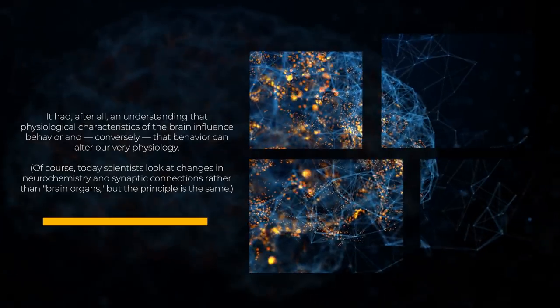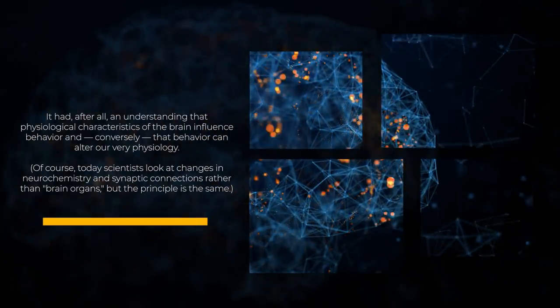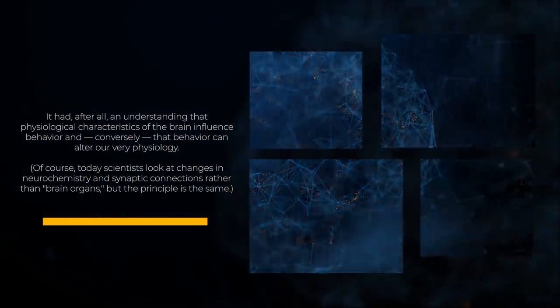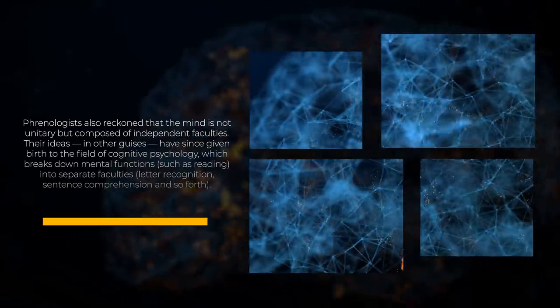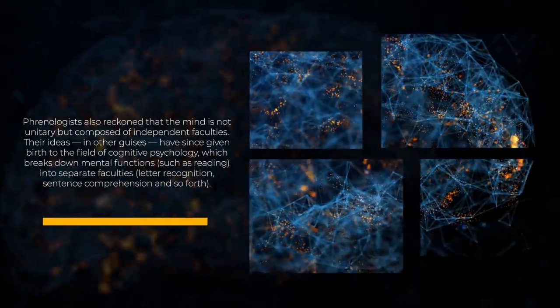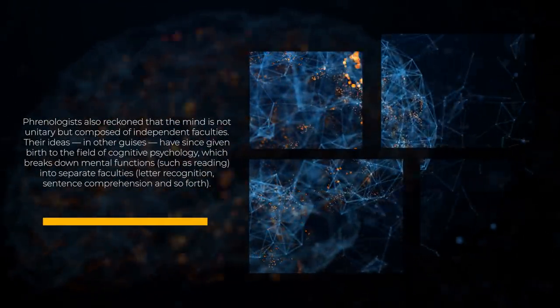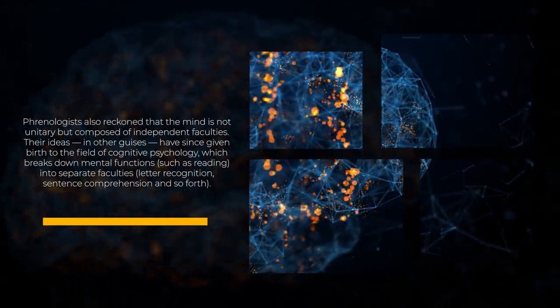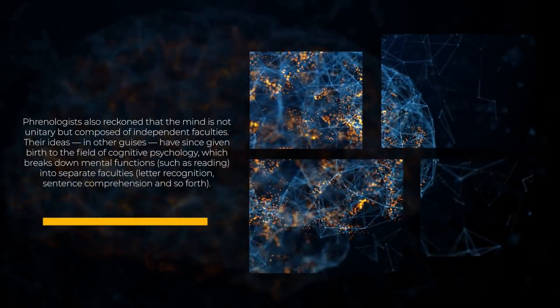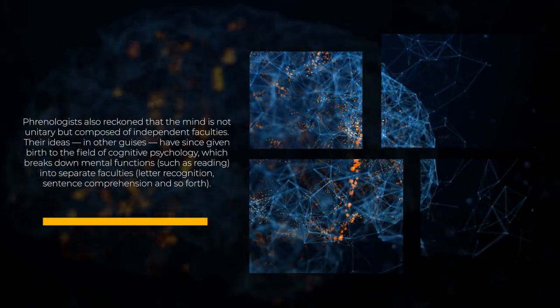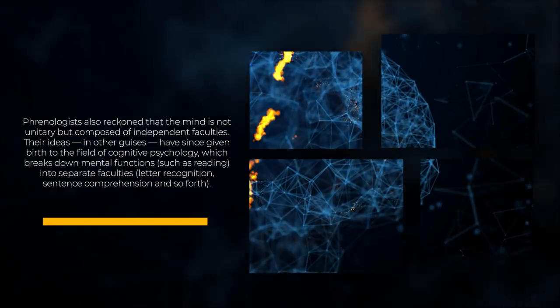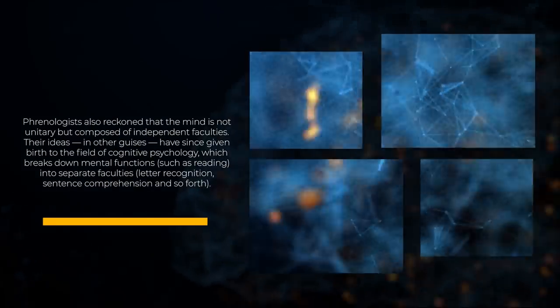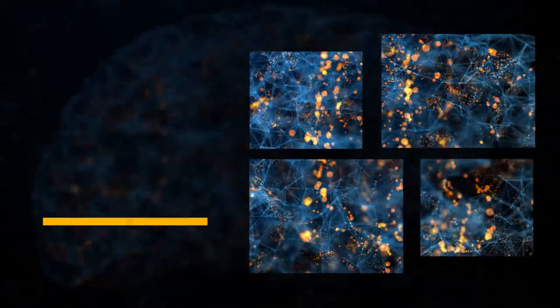Of course today, scientists look at changes in neurochemistry and synaptic connections rather than brain organs, but the principle is the same. Phrenologists also reckoned that the mind is not unitary but composed of independent faculties. Their ideas in other guises have since given birth to the field of cognitive psychology, which breaks down mental functions such as reading into separate faculties: letter recognition, sentence comprehension, and so forth.